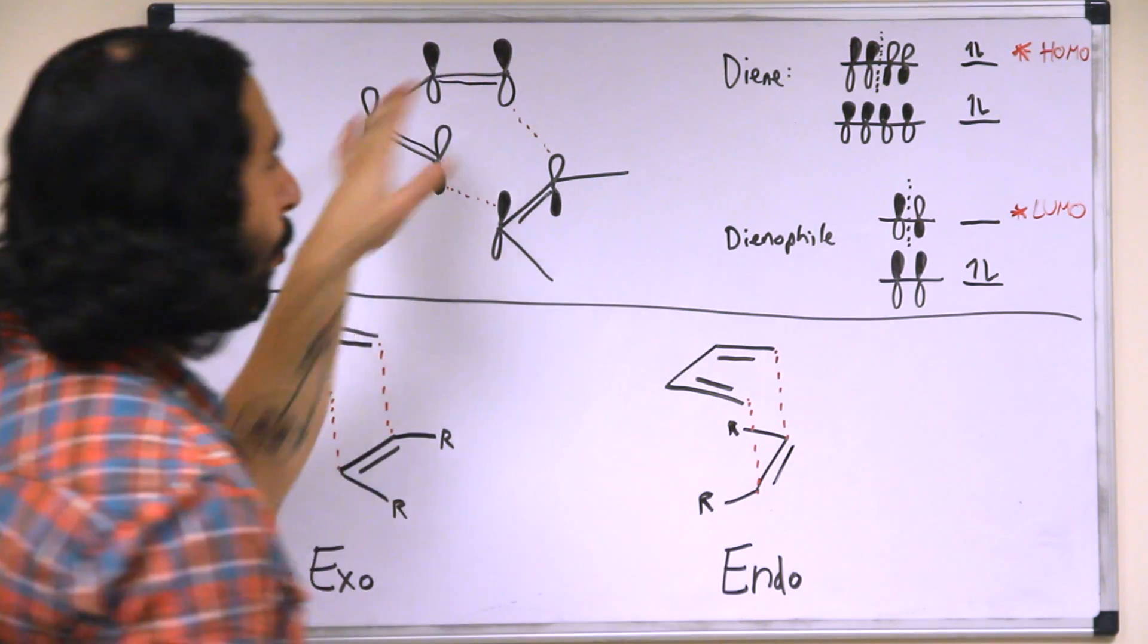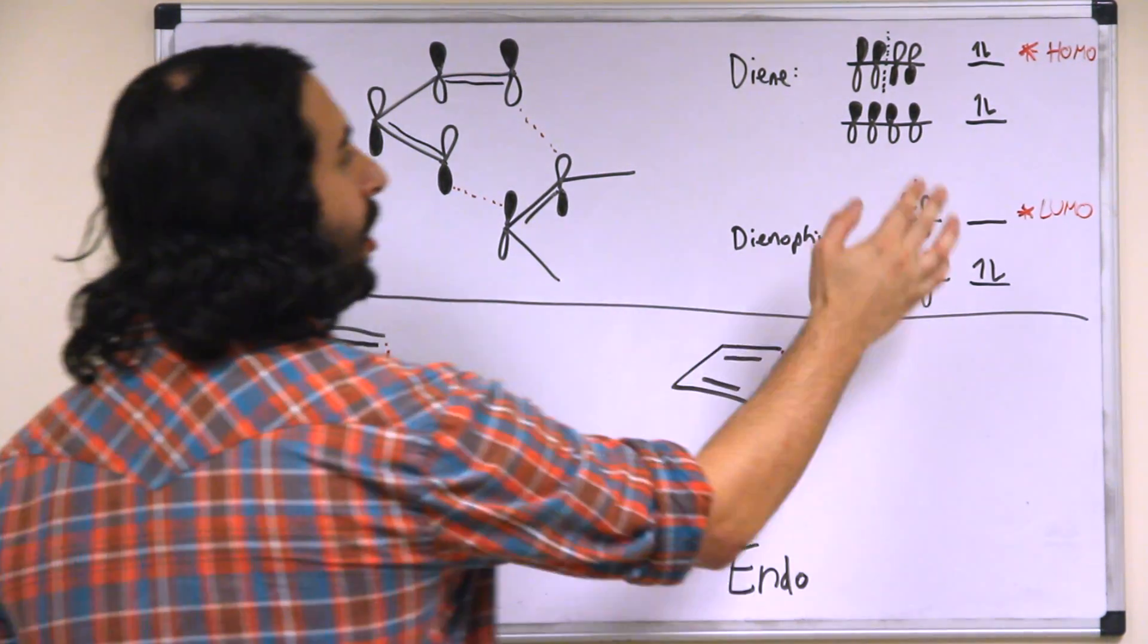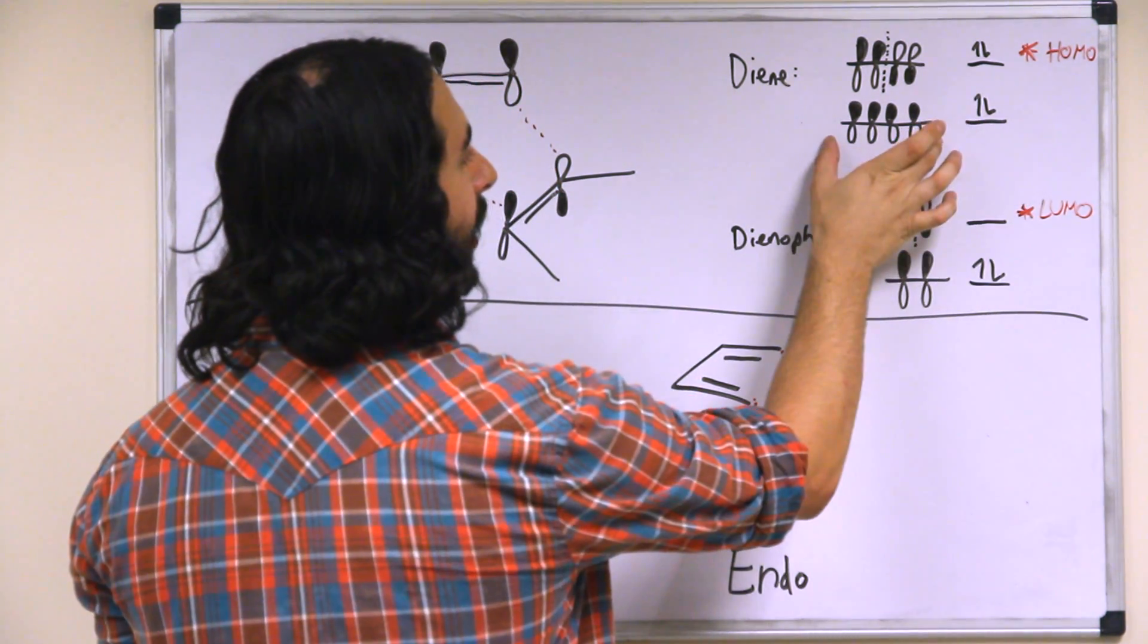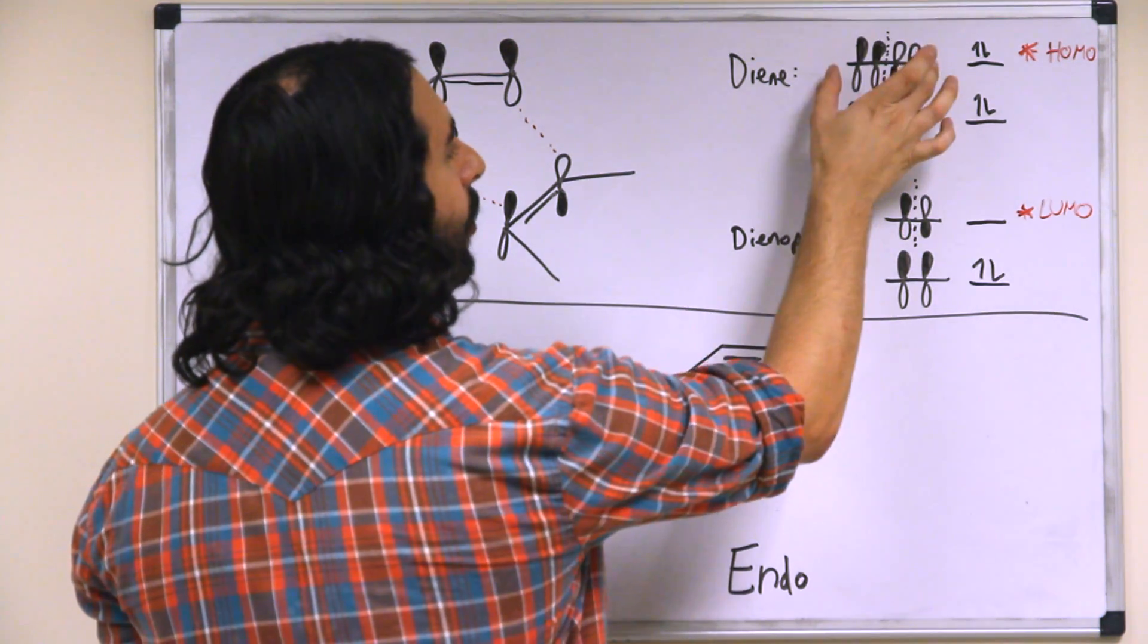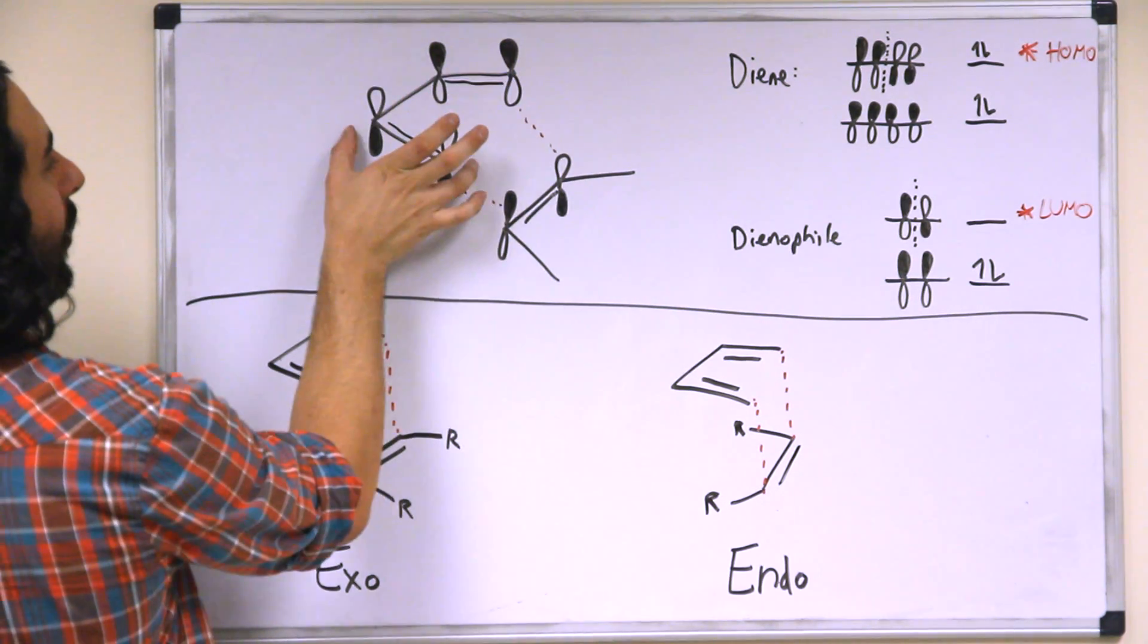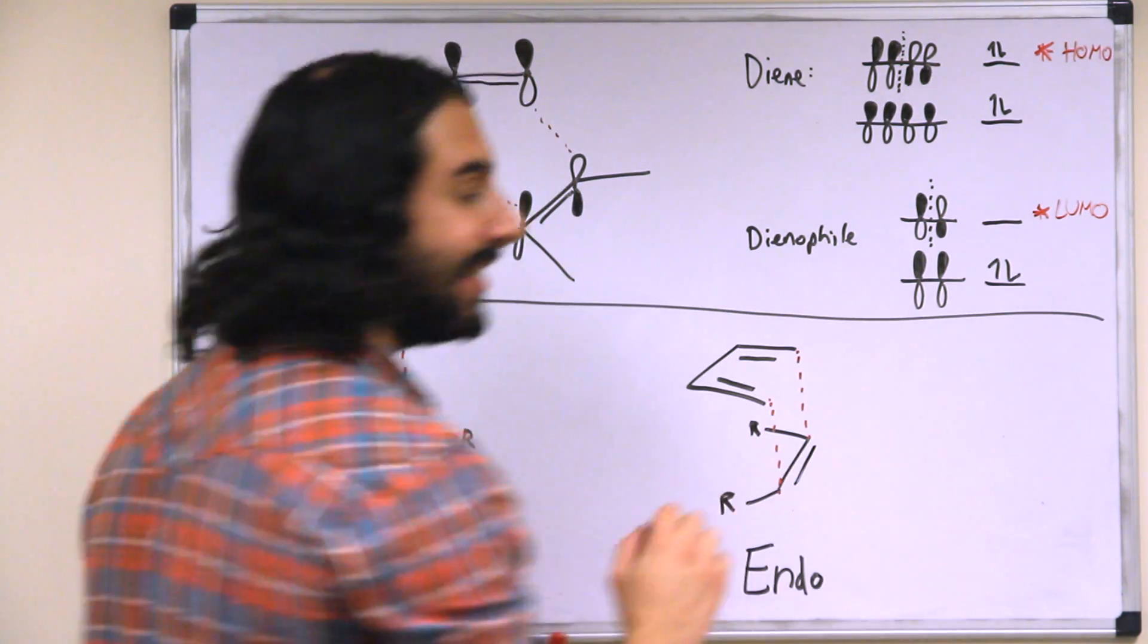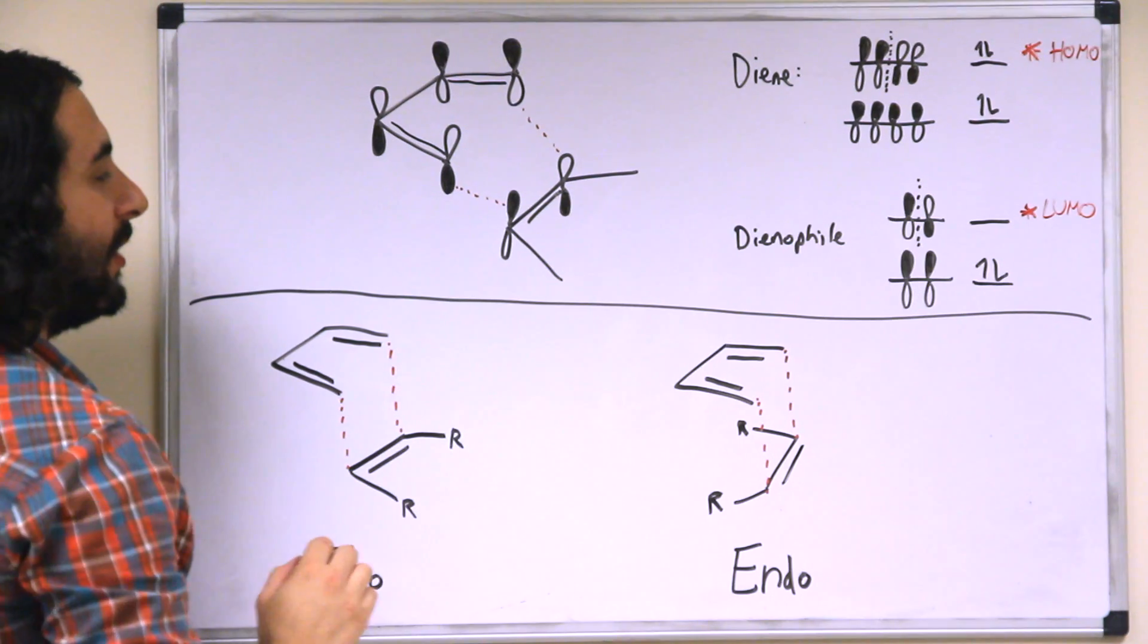So let's take a look at butadiene here. So if you look at the orbital diagram, there are four pi electrons that need to be accounted for. So two fit in each orbital. So here are the first two in the first orbital. And then the second orbital contains one node. So that is what is going to put us in this configuration here with the lobes oriented as they are. So that's the highest occupied molecular orbital on butadiene.